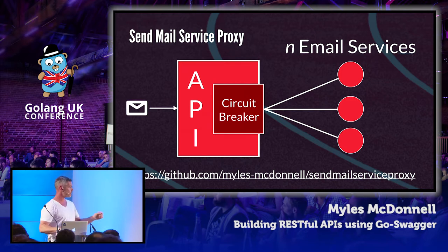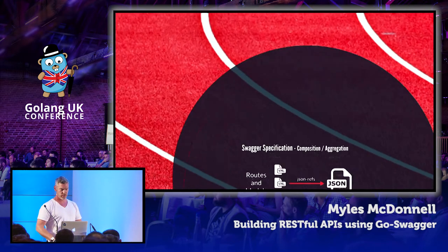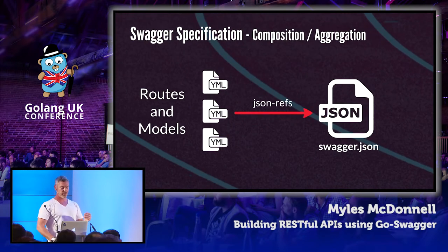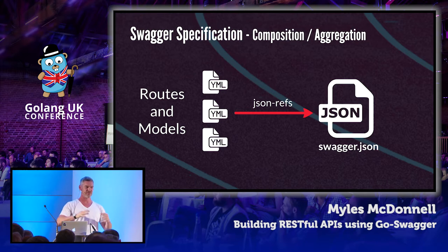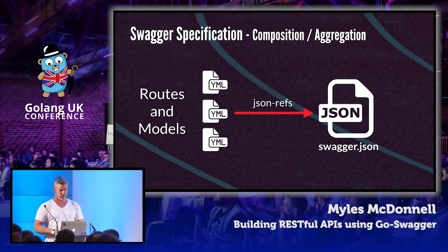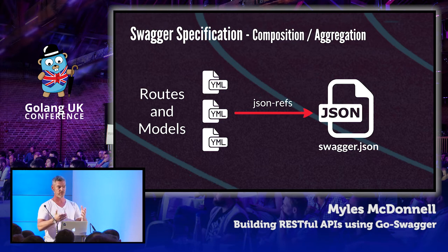The code for this is online so you can follow that link and take a look — it's got the build scripts and all the tooling there. The first thing we need to do is write our Swagger spec. But we don't want to work with a single file — you can imagine APIs get quite large in terms of the number of routes and models, and working with a single JSON file becomes a nightmare. So we have a model for splitting up that specification into separate YAML files aligned with routes and models, and then using the toolchain we aggregate that back into a single file.